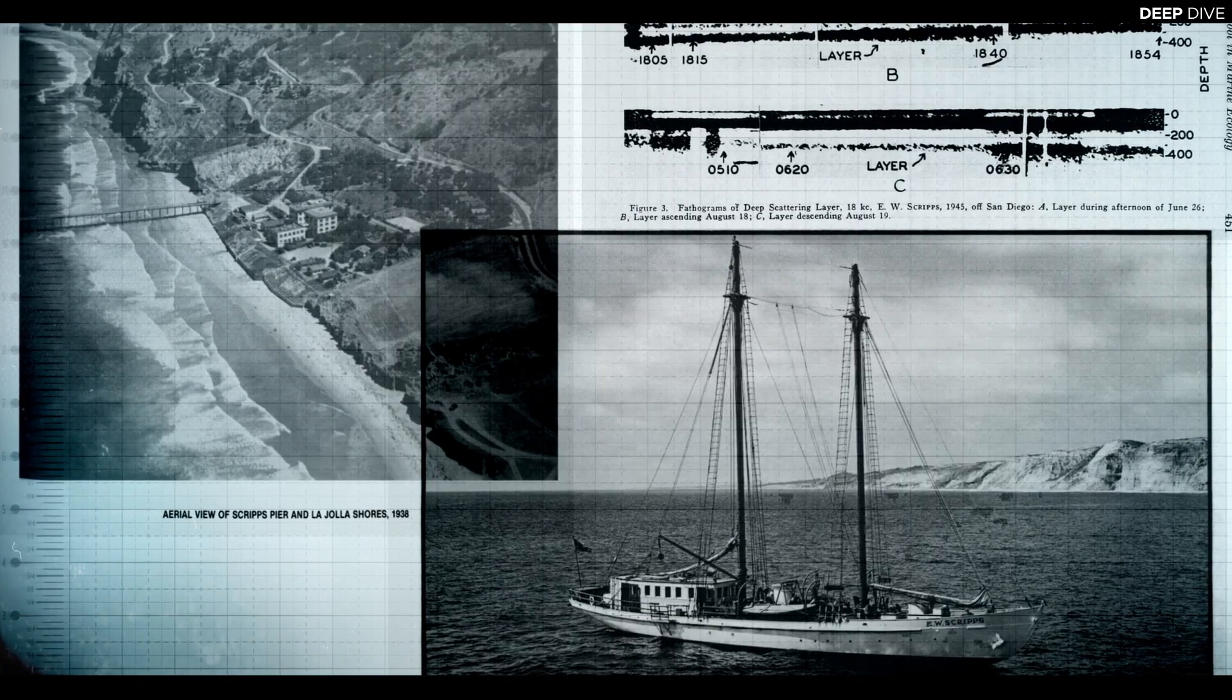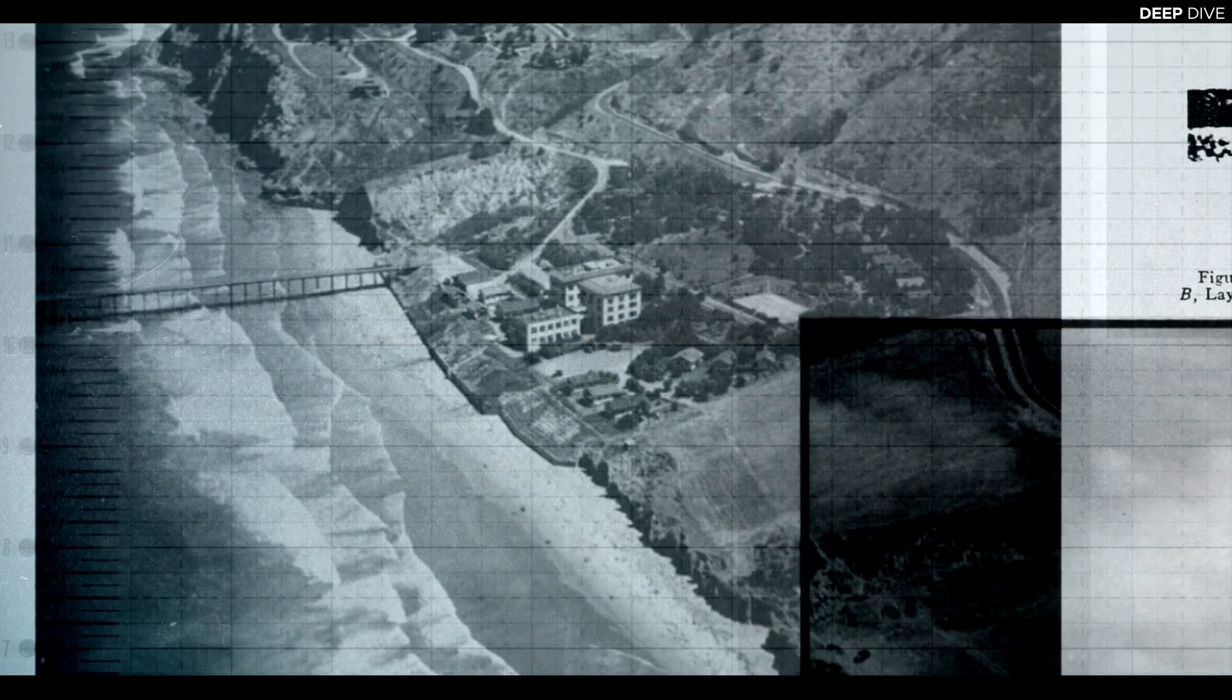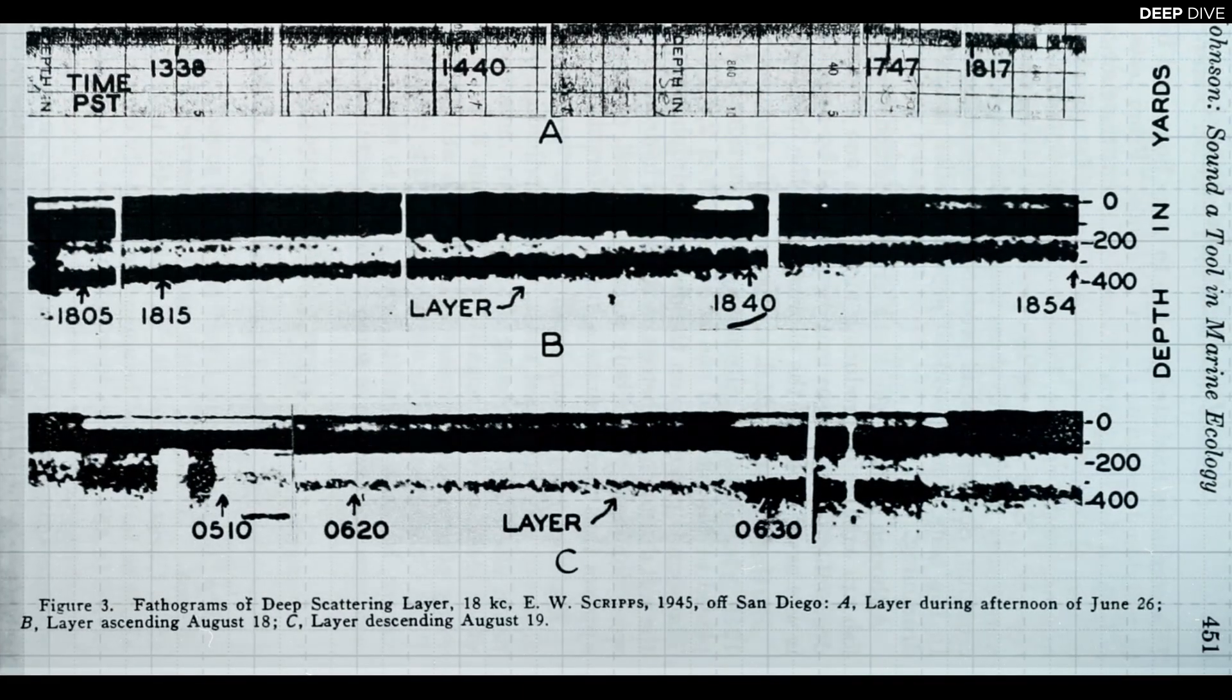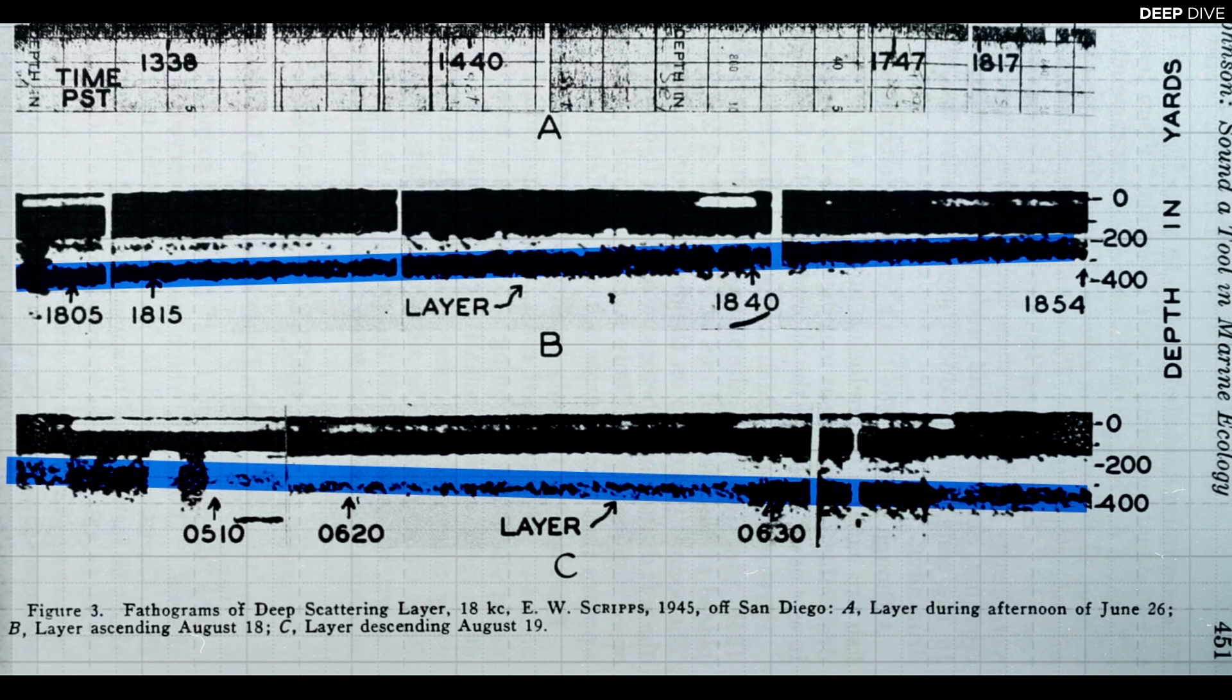A first breakthrough came in the late 40s when a team of biologists of the Scripps Institute of Oceanography, in collaboration with the University of California's Division of War Research, could show that the layer seemed to move up and down the water column depending on the time of day.